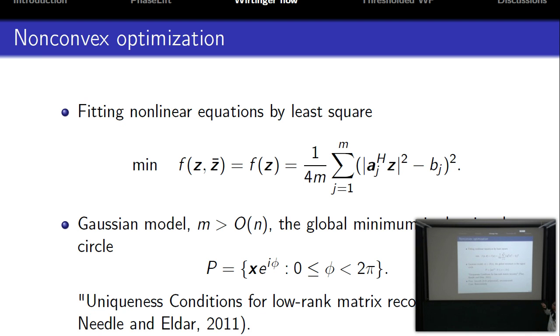The objective function is the least-squares function. Because we have quadratic measurements, the function is actually a fourth-order polynomial. All the global minimizers lie on the signal circle, determined up to a global phase.